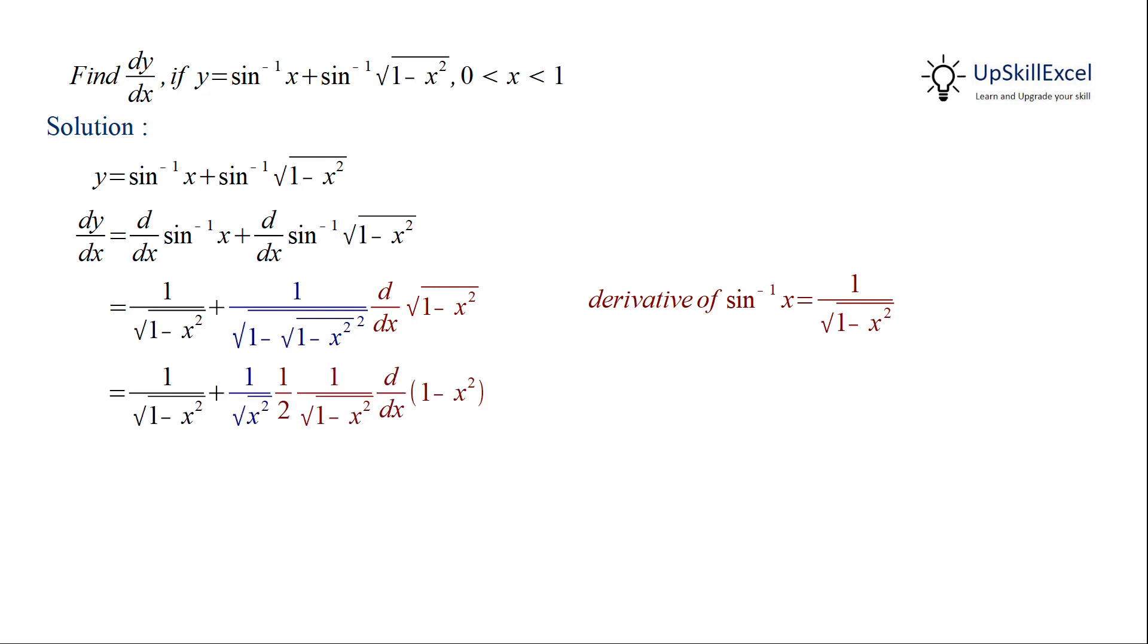Now we can do the simplification. The second term will get simplified to 1 upon under root of x square, followed by the differentiation of under root of 1 minus x square, which is equal to half of 1 upon under root 1 minus x square times d by dx of 1 minus x square.